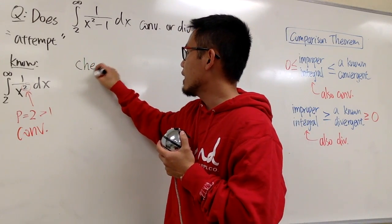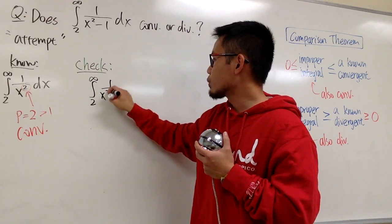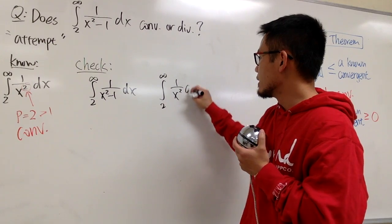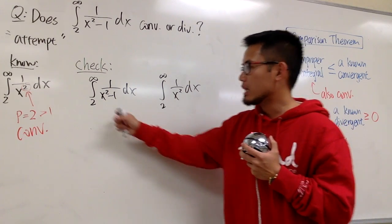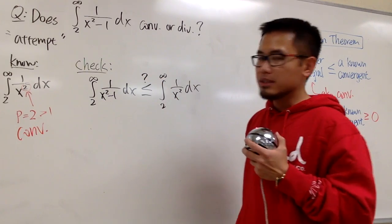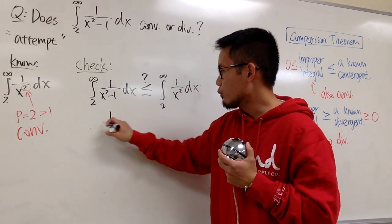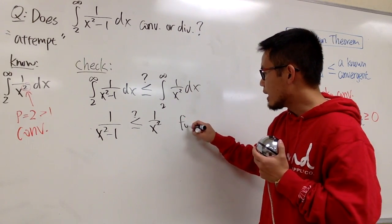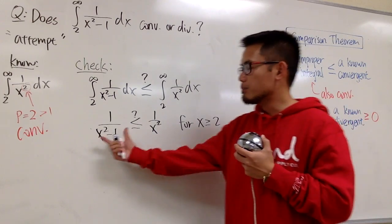The second step is the check. On the left-hand side we have the integral from 2 to infinity of 1 over x squared minus 1 dx, and on the right-hand side the integral from 2 to infinity of 1 over x squared dx. We're using a convergent, finite value, and we hope to show that our integral is less than or equal to this finite value. So focusing on the functions only, we have 1 over x squared minus 1 is less than or equal to 1 over x squared, for x greater than or equal to 2, where both terms are positive.